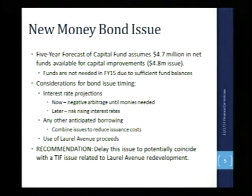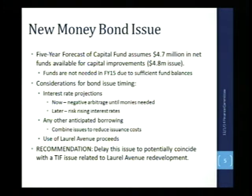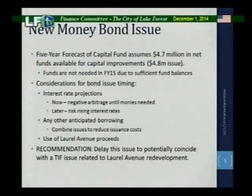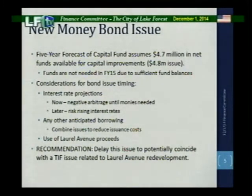Some of the considerations for bond issue timing reflect interest rate projections. If the bonds are issued now, the city would be in a negative arbitrage position because the city could not earn enough interest on the bond proceeds to pay the interest on the debt — the interest on the debt would be higher than what we could earn on the proceeds. However, if the bond issue is delayed to a later date, the city risks rising interest rates and issuing those bonds at a higher rate in the future.